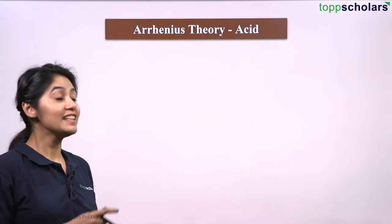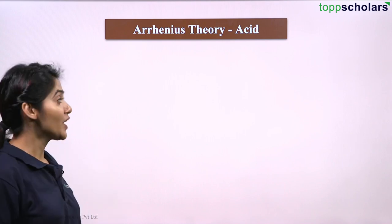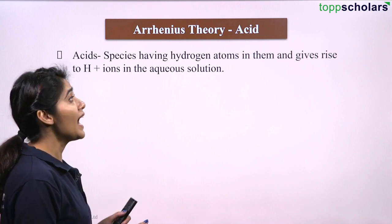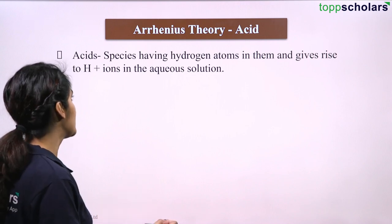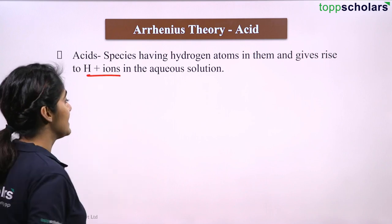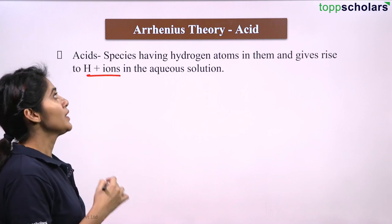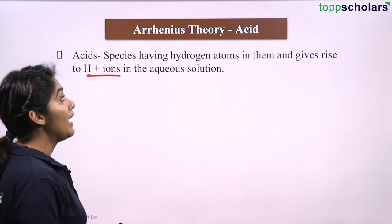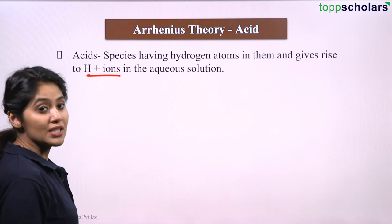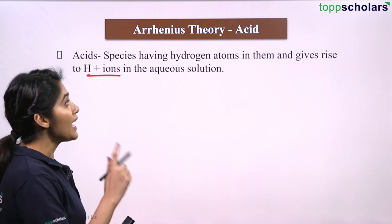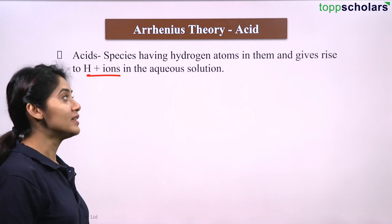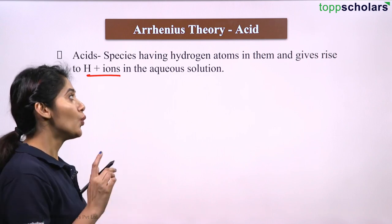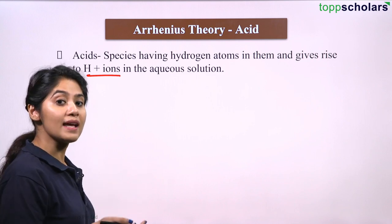Let's start with the Arrhenius theory of acid. As per Arrhenius theory, acids are the species having a hydrogen atom in them and give rise to H+ ions in aqueous solution. What we can understand is these are those species or compounds which have hydrogen atoms in them, and in aqueous solution they release H+ ions or hydrogen ions. Only those compounds are known as acids.